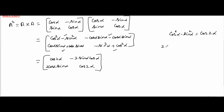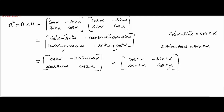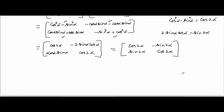So A square equals [[cos2α, -sin2α],[sin2α, cos2α]]. Then A cube equals A square times A, which gives [[cos3α, -sin3α],[sin3α, cos3α]].